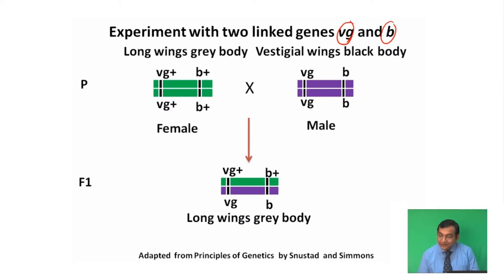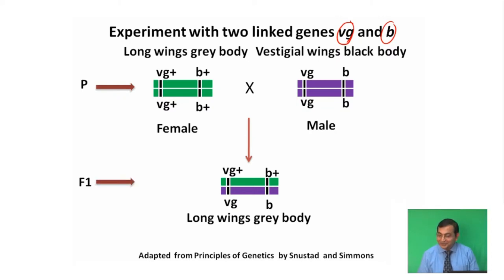In this cross, a wild type female with long wings and grey body is crossed with a vestigial wing, black body mutant male. In the F1 generation, we obtained long wings and grey body. That is, the wild type long wings and grey body color are dominant over the mutant vestigial wing and black body.